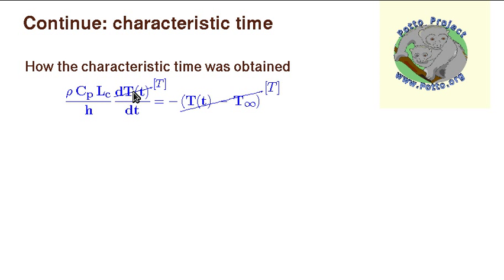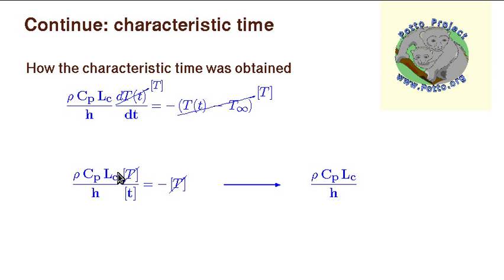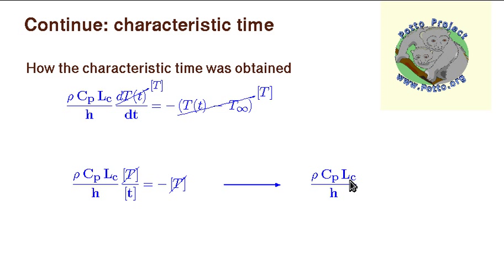We notice that dT has units of temperature and the temperature difference has temperature units as well, and therefore they cancel out. We are left with the characteristic time divided by time, and therefore to keep it dimensionless we must have rho times C_P times L_C divided by h as units of time.